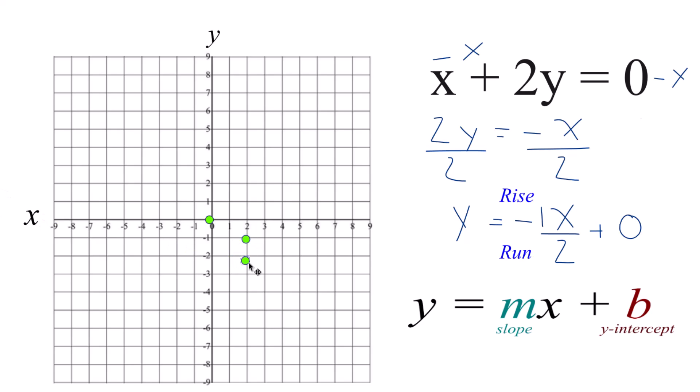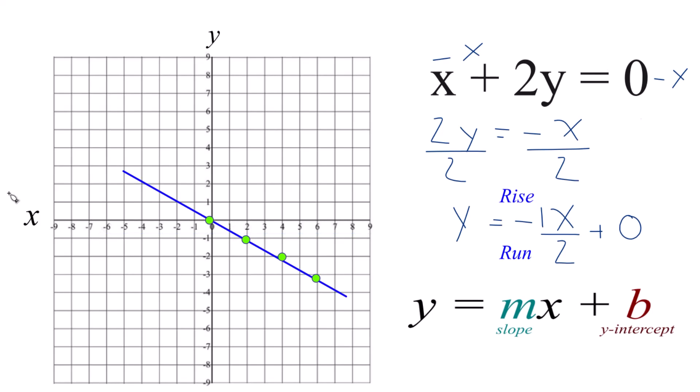One more time, down 1, run 2. And you can see that's our graph there. Let's put a line through it and we'll put some arrows here to show it goes to infinity.